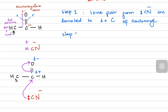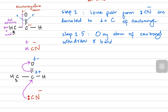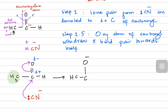Step 1.5: the oxygen atom of the carbonyl withdraws the pi bond pair of electrons towards itself. After step one is completed, the oxygen becomes entirely negative. The sigma bond is still present between carbon and oxygen. On the left there is a methyl group which remains the same, on the right the hydrogen remains unchanged, and at the bottom a cyanide is now attached to the carbon.